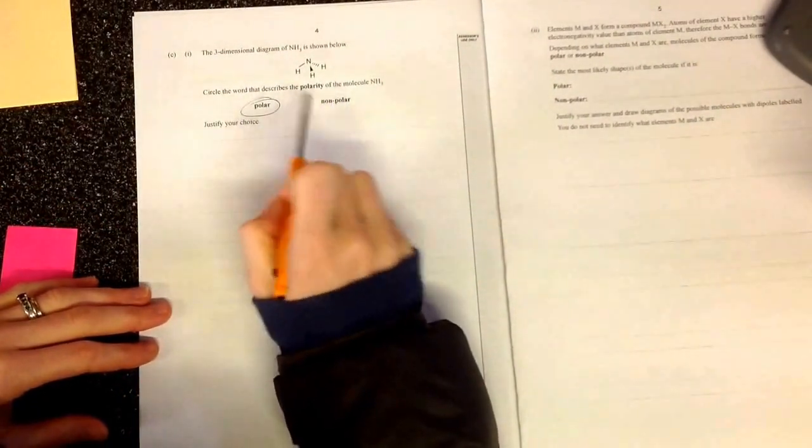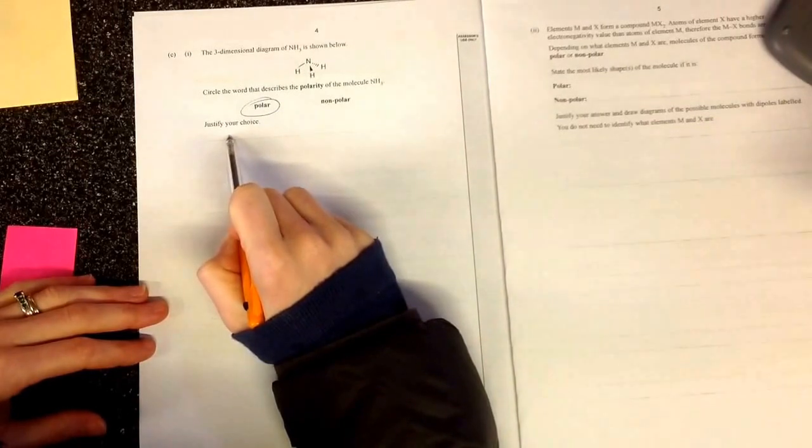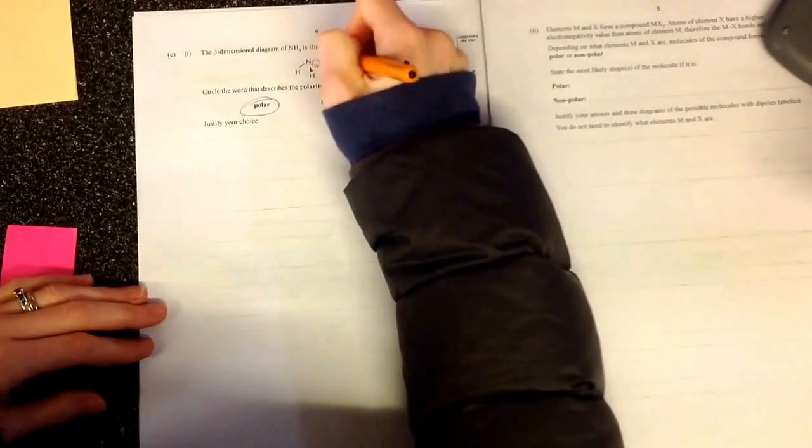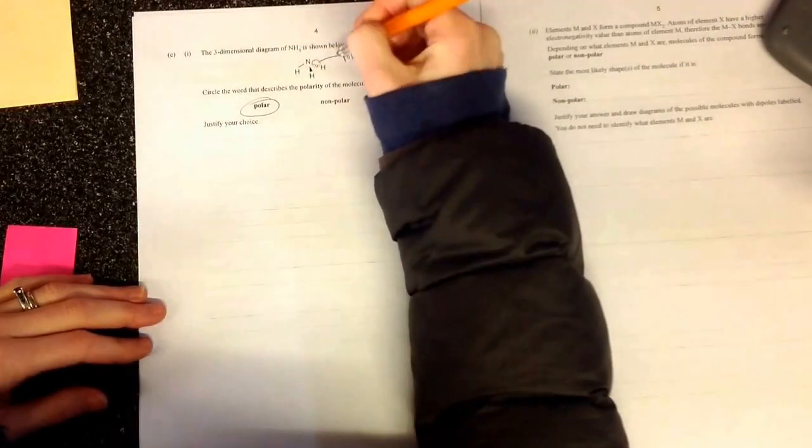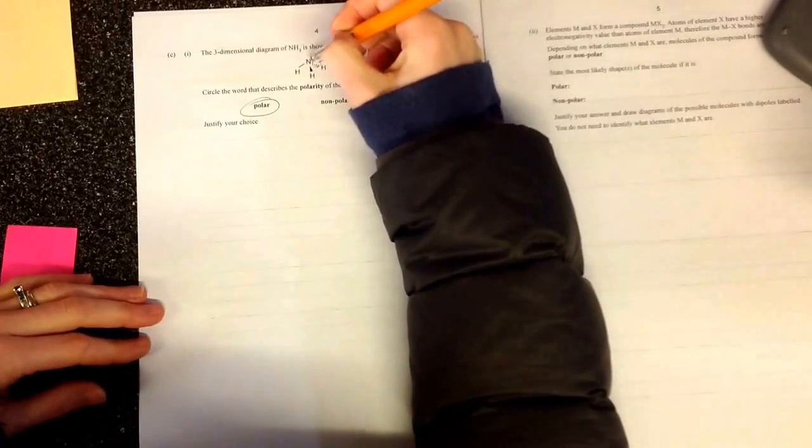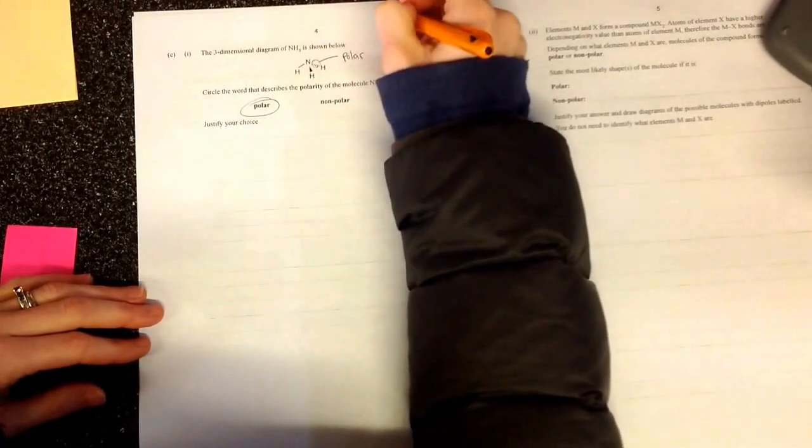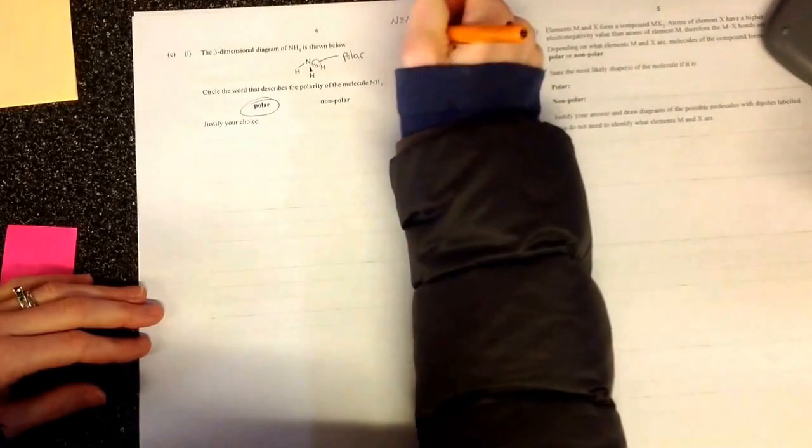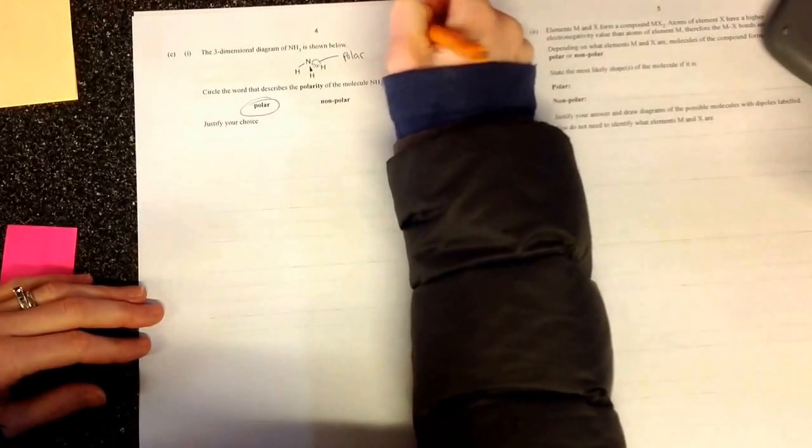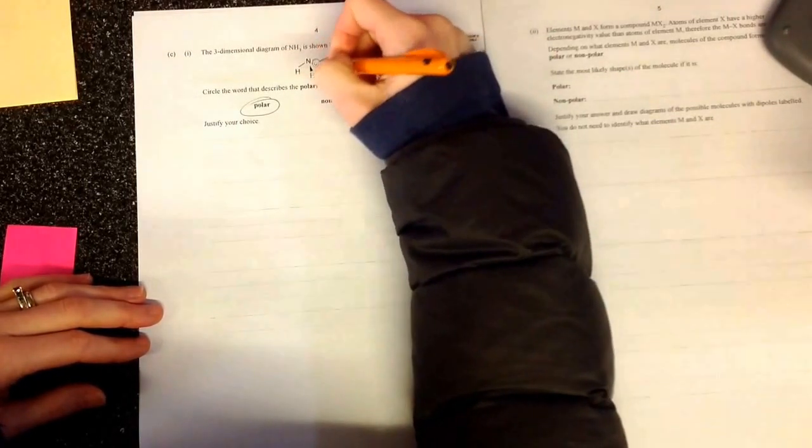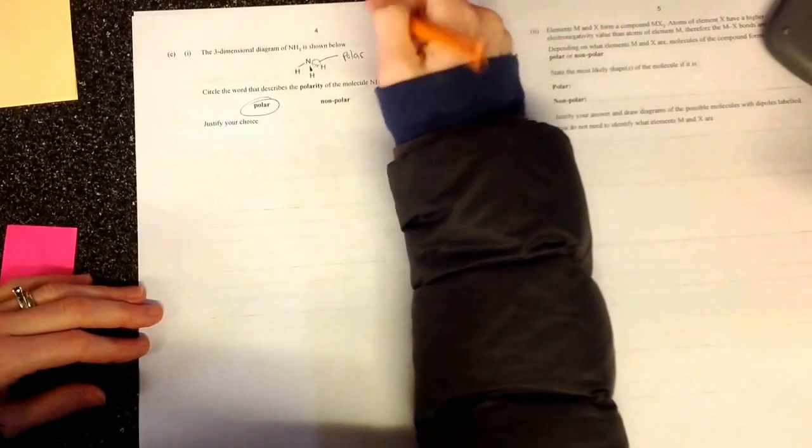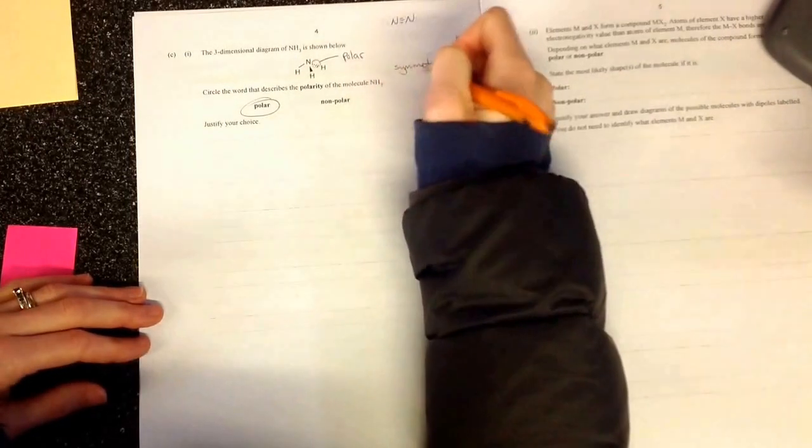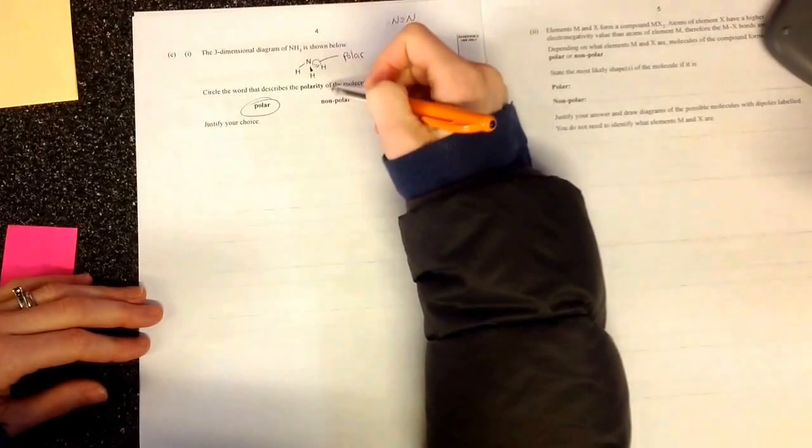Circle the way that describes the polarity is polar. Justify why. You need to talk about the bonds, the fact that these bonds are polar bonds. The only way that bonds are non-polar are when they are between two atoms that are the same. For example, if you have nitrogen to nitrogen, that's actually a triple bond like that, but that is a non-polar bond because they have the same electronegativity. Here, they are not the same, therefore it is a polar bond. You also then need to talk about the symmetry, the fact that this molecule is not symmetrical and therefore the dipole doesn't cancel out.